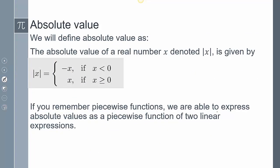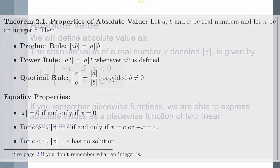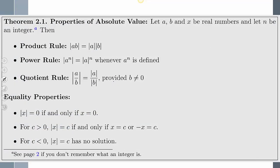Tomorrow we'll look at how we transform this absolute value into a piecewise function, isolating the negative and positive possibilities. Because we're isolating those cases, we'll be able to set up certain equations and solve them. Looking at the different properties, if a, b, and x are real numbers and n is an integer, we have a few rules.